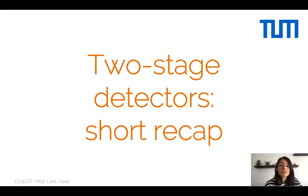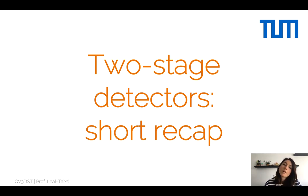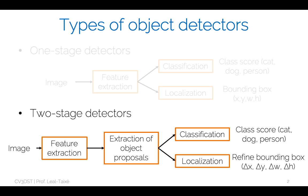Welcome to the second lecture on object detection from the CB3DST series. We'll start with a short recap on the two-stage detectors from the last lecture. We have mainly two categories for object detectors based on machine learning and deep learning in particular. In the last lecture, we saw two-stage detectors.